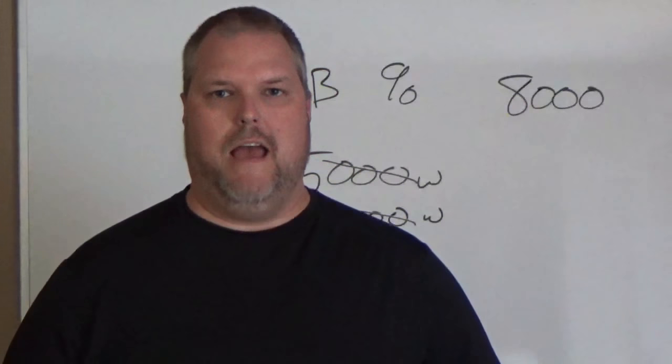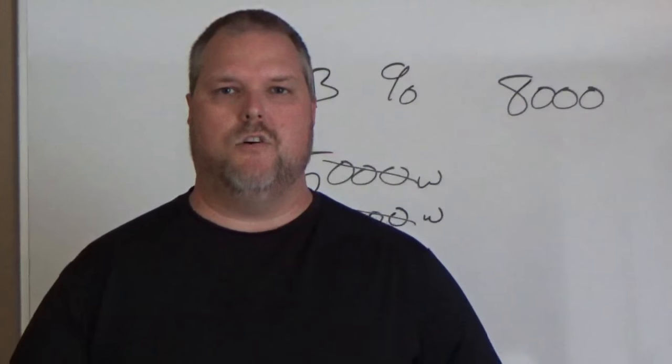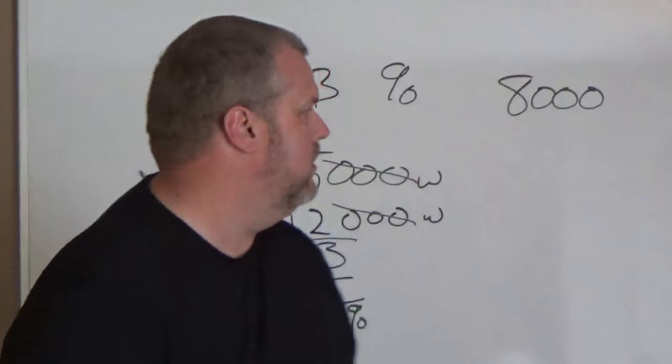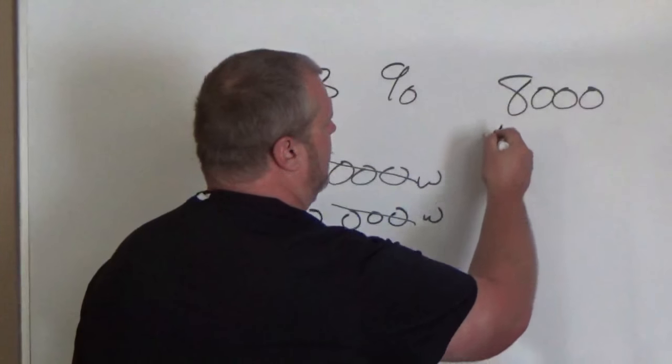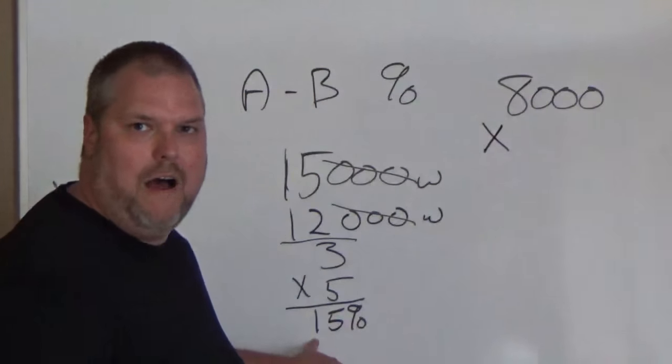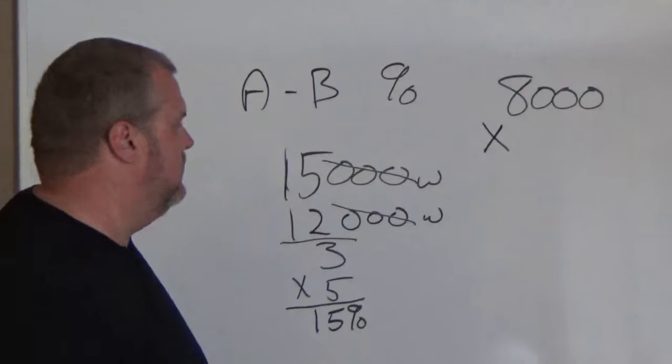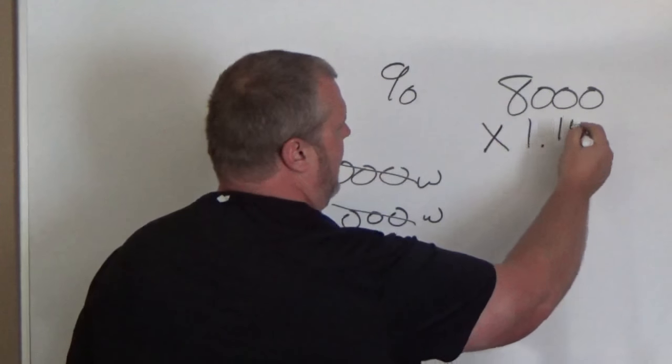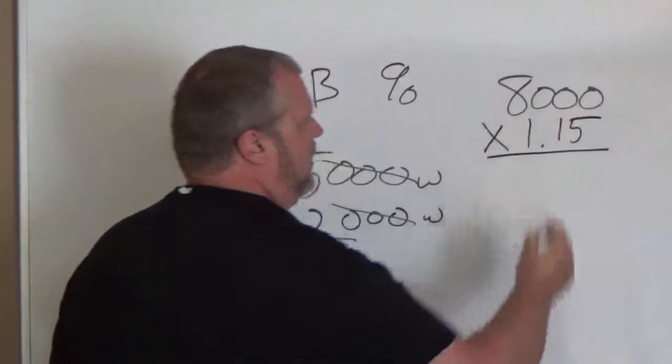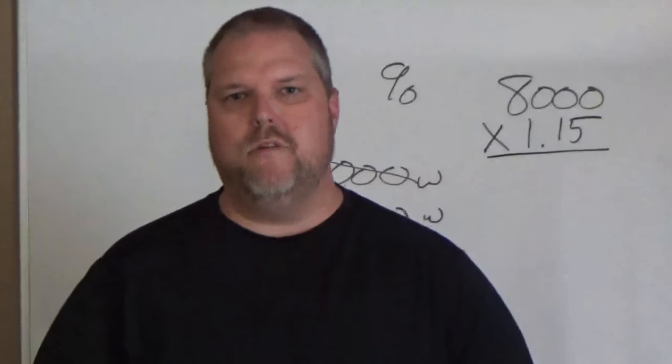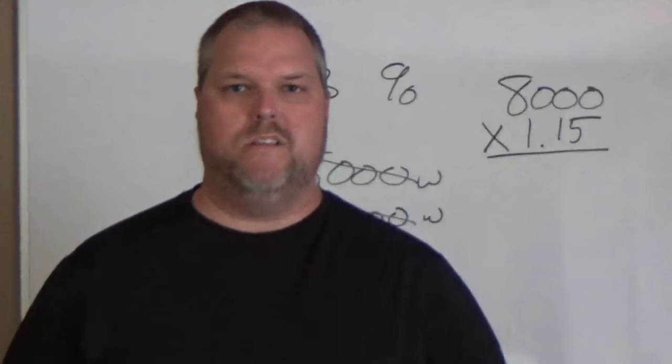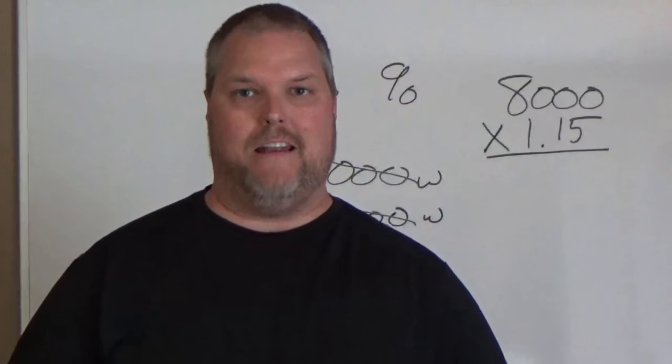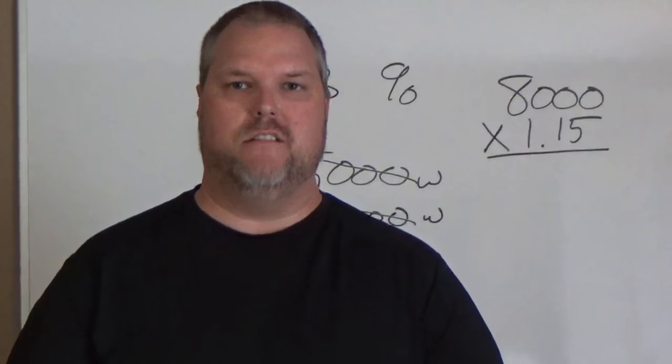Our demand starts at 8,000. How do I find out what my demand factor is for line 12? I know I have 15%. I'm going to multiply 1.15 by 8,000 because remember, we're dealing with one single range, so we're adding 15% to it.